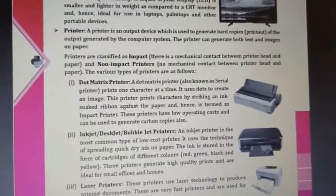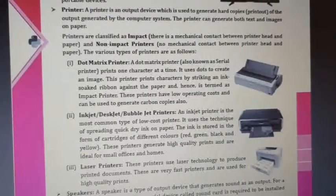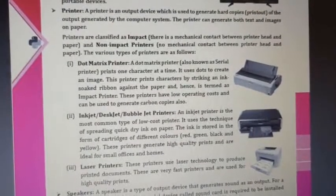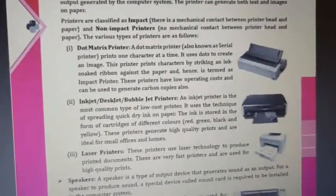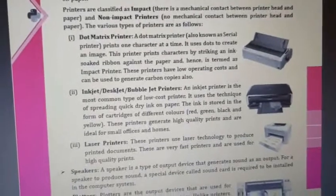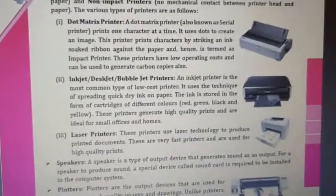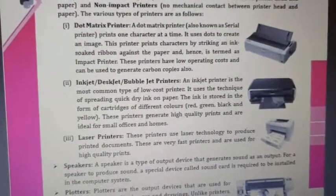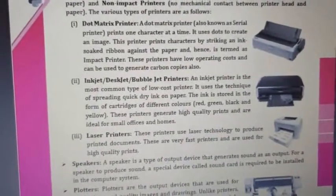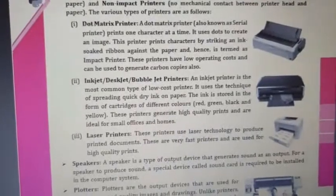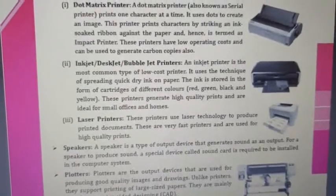Printers are classified as impact printers, which have mechanical contact between the printer head and the paper, and non-impact printers, which have no mechanical contact between the printer head and the paper. First is the dot matrix printer, also known as a serial printer, which prints one character at a time and uses dots to create an image. Next is the inkjet desktop bubble-jet printer, a commonly used low-cost printer that sprays ink onto paper stored in cartridge form.